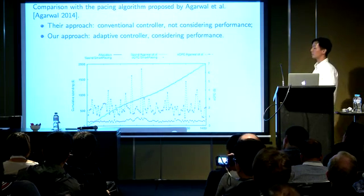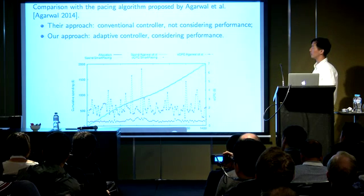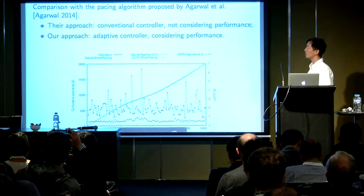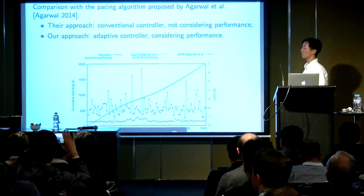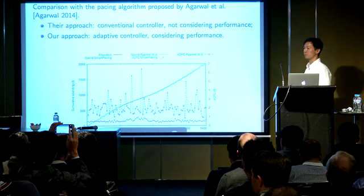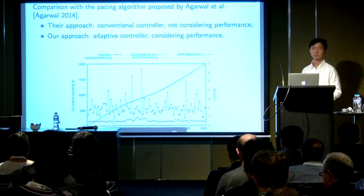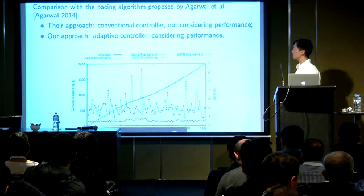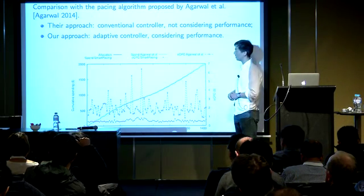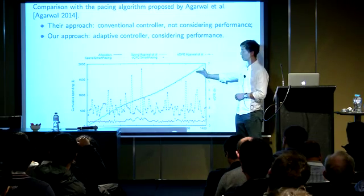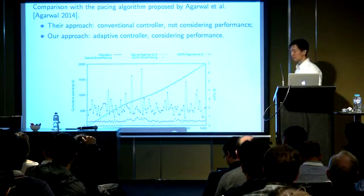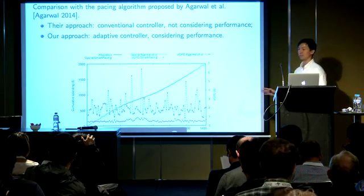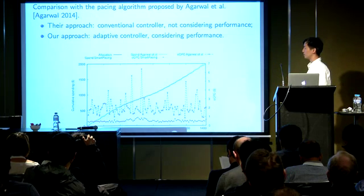This is a comparison with the state-of-the-art prior work developed by Agua and colleagues, also published in KDD 2014. Their approach uses a conventional controller and does not consider performance at all. Our approach uses an adaptive controller and explicitly optimizes campaign performance. Both our approach and theirs can align with the accumulative spending plan very well. However, our ECPC is way lower than theirs, so campaign performance can be much better using our approach.